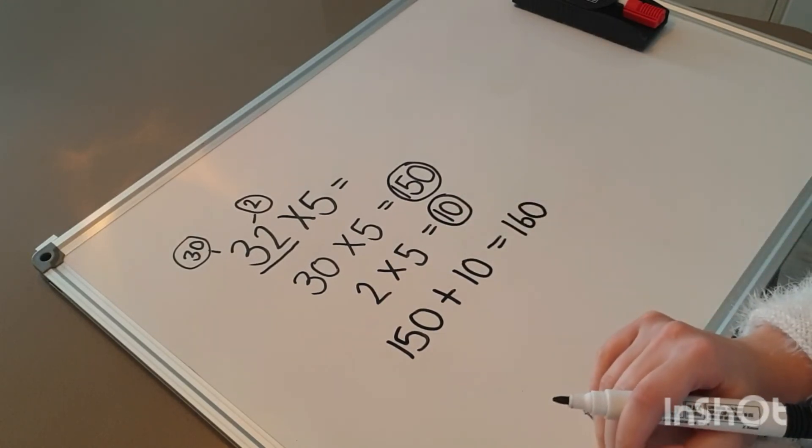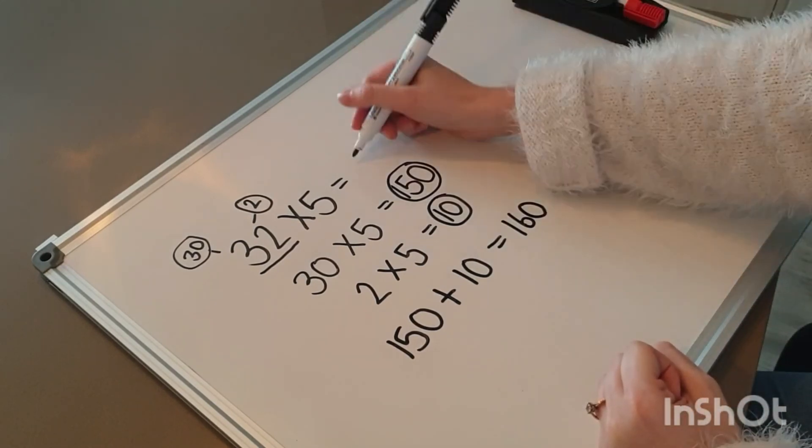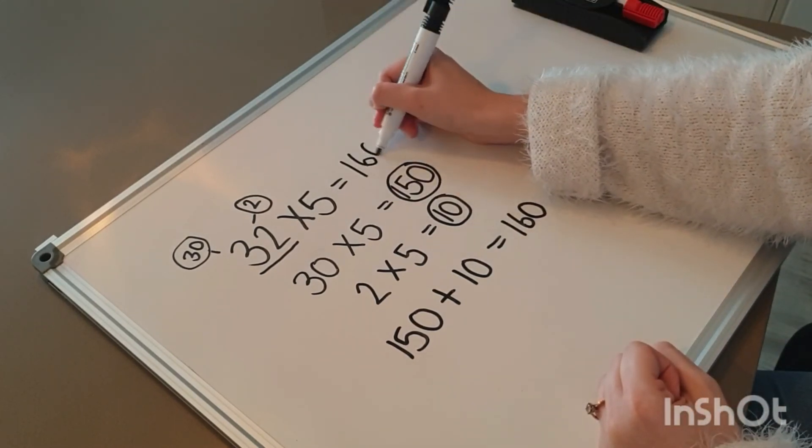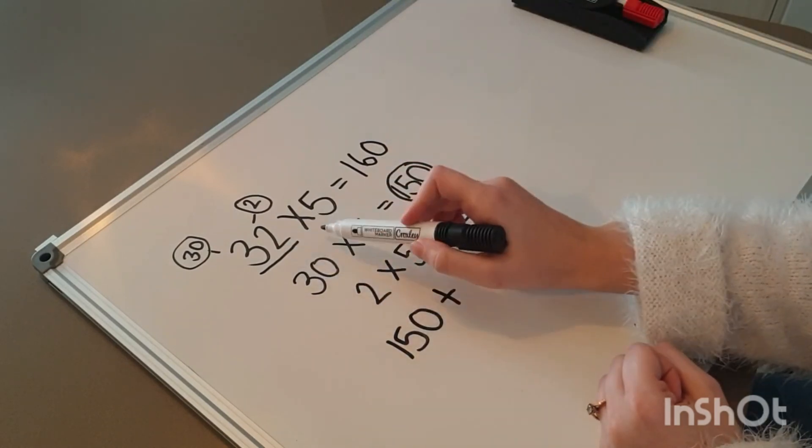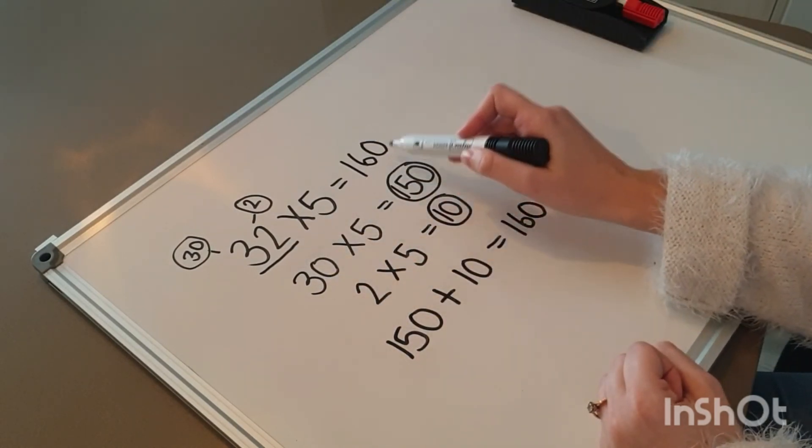But my sum is not complete until I write it on top. So, 32 times 5 equals 160.